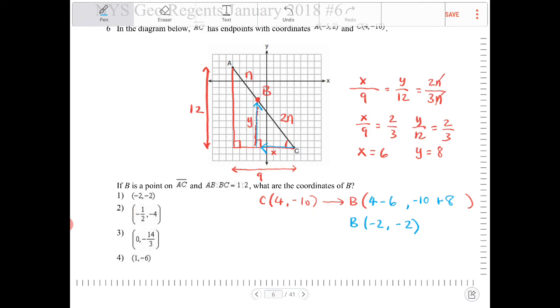So point B will have coordinates of negative 2, negative 2. And if you look at my original placement of where point B is, it is relatively close there, but not quite on that exact point. Negative 2, negative 2, that would be option 1.